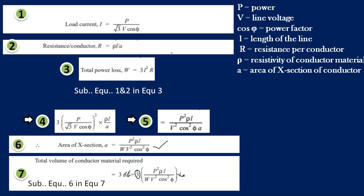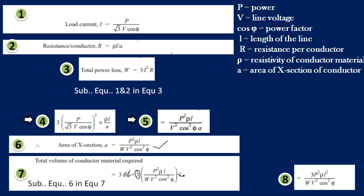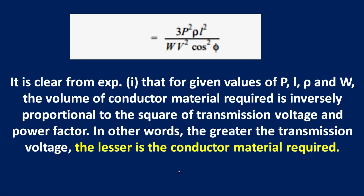From equation 8, the total volume equals 3 times P squared times rho times L squared, divided by W times V squared times cos squared phi. This is the key equation, where the values of rho, W, power, and length are fixed, with total losses accounted for.